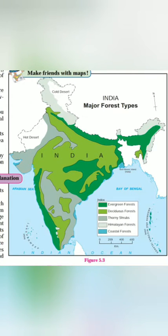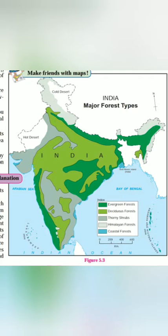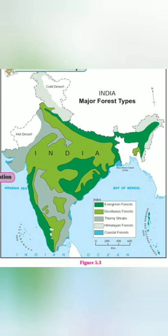Other examples include Acacia and Khejri. Various varieties of cactus like aloe vera and agave are also found. Quite many cactus varieties are found in desert and dry semi-arid regions.